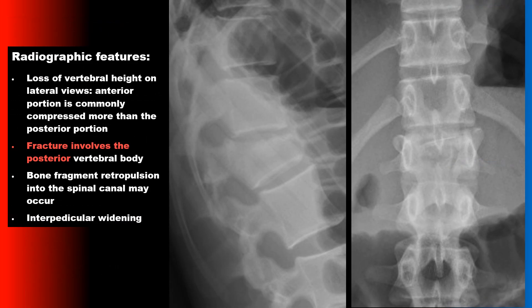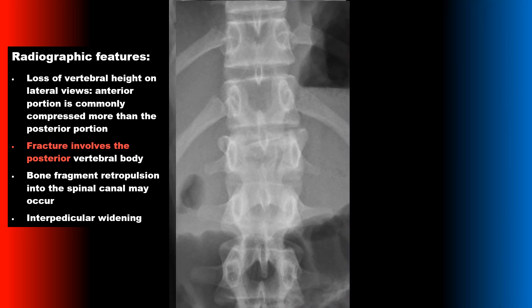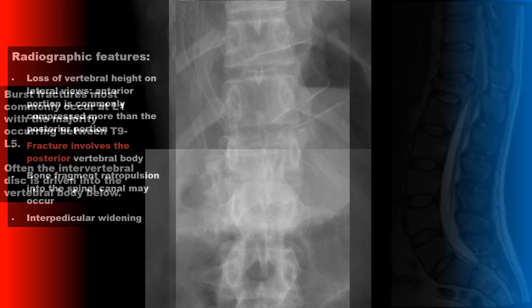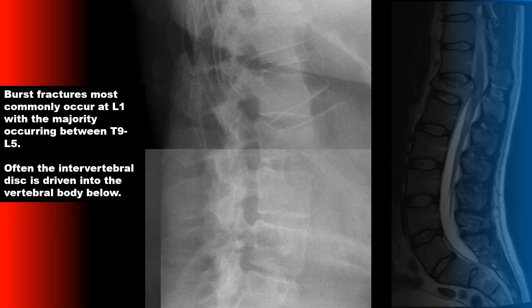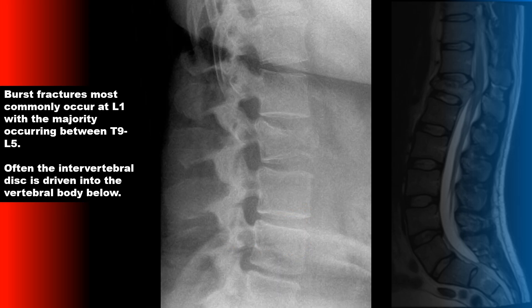The radiographic features of a burst fracture include a loss of vertebral body height on the lateral view — the anterior portion is commonly more compressed than the posterior portion. There can be bony fragment retropulsion into the spinal canal, and on the frontal radiograph you should see interpedicular widening, which is a widening of the space between the pedicles. Burst fractures most commonly occur at L1, with the majority occurring between T9 and L5. Often the intervertebral disc is driven into the vertebral body below.